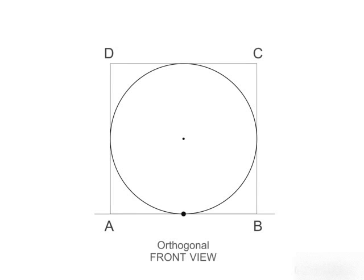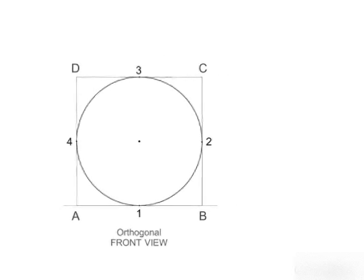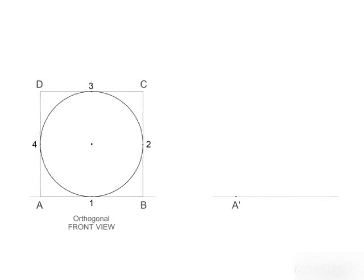Observe that it displays its true shape and size in orthogonal front view. Now enclose the lamina in a square box ABCD, then mark the midpoints 1, 2, 3, 4 of the sides of the box. To start the solution, mark a point A dash on a reference line.